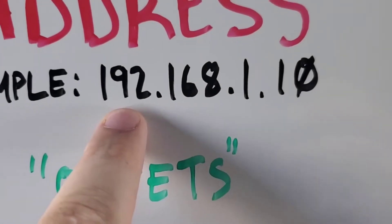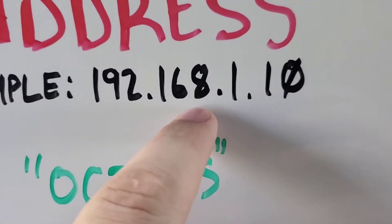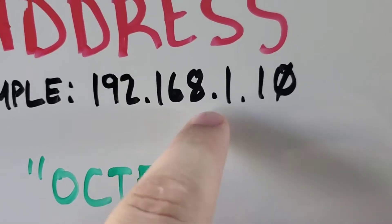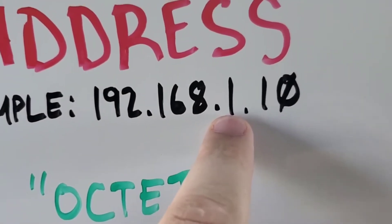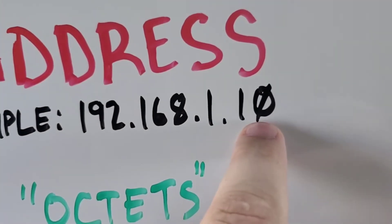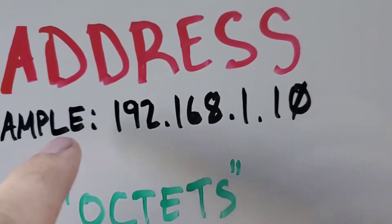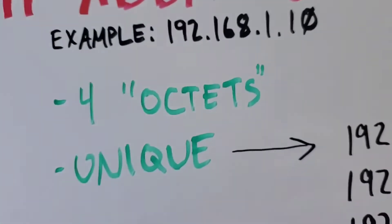192 is the first octet, 168 is the second octet, 1 is the third octet, and 10 is the fourth octet — four octets of an IP address.